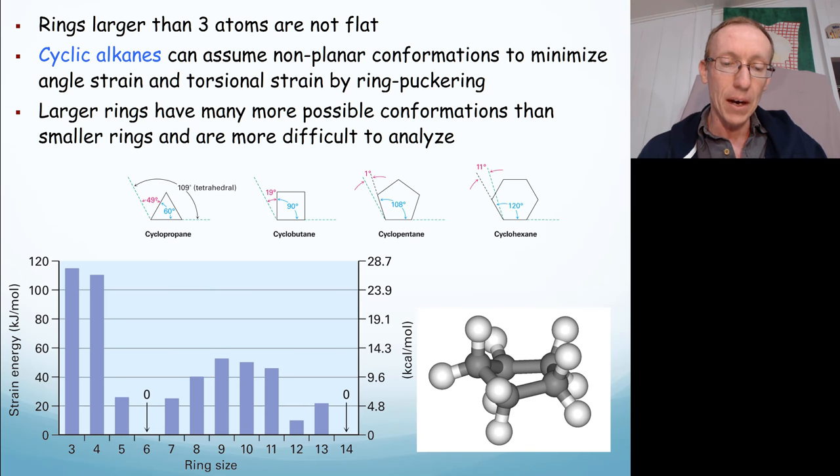And also something called torsional strain, so the ring puckers to get rid of interactions that are energetically unfavorable. Larger rings have got a lot more possible conformations available to them than smaller rings, and they're much more difficult to analyze.